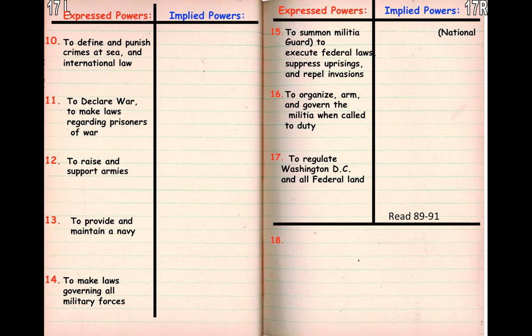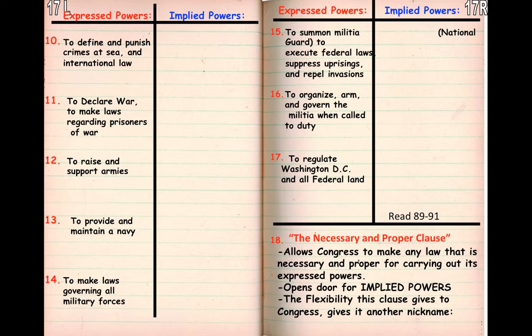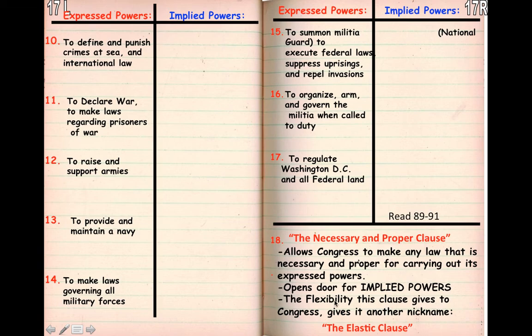Now, those are all of our expressed powers. But Congress kind of panicked and said, what if we forgot something? What if we need to add more? We're cutting it off too early and making this too weak, like how we did with the Articles. So we came up with the necessary and proper clause, which created an open door for implied powers. For example, to raise and support armies is an expressed power, but if nobody wants to join the army, the implied power would be to force people to join — a draft. It's also called the elastic clause because it provides flexibility to the Constitution.